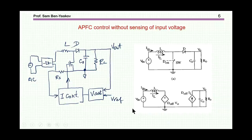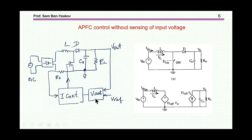So what is the idea of this control without sensing the input voltage? Here we have the stage again — this is the AC rectifier boost output section, and here is the control. The control has actually two parts: this is the control of the current, and then we have the output voltage control section. Here we are measuring just the current of the inductor — the current of the input, rectified.